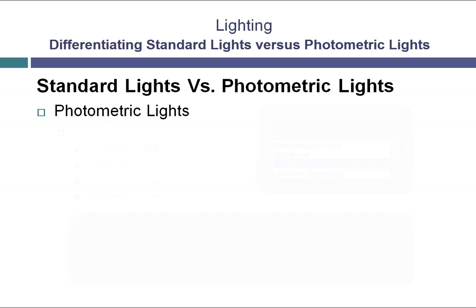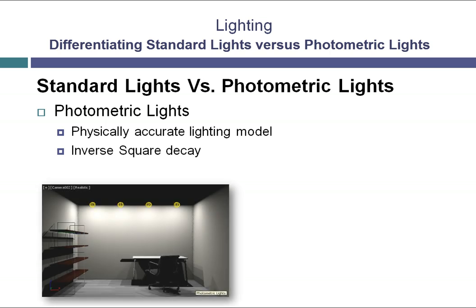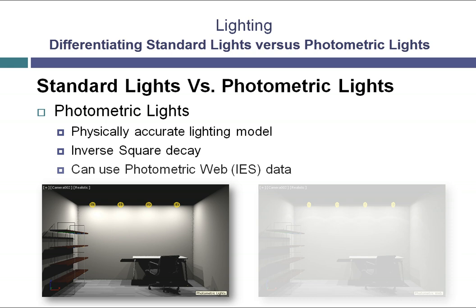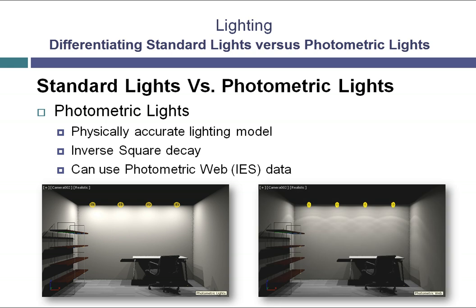One important thing to keep in mind when using photometric lights is that they are based on a physically accurate lighting model. From the point of the light source, the light uses the inverse square law to determine the decay of the light. There is no decay start value. Another advantage to using photometric lights is the ability to use photometric web or IES data files. These files are essentially a series of numbers that indicate the brightness of a light at a specific direction from the source, allowing you to obtain a highly realistic representation of not only a light, but also the pattern and intensity of light emitted from a fixture.